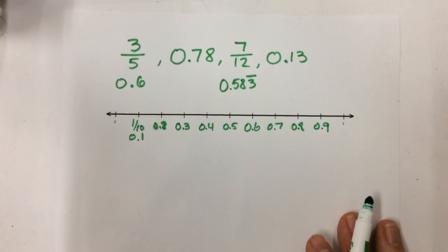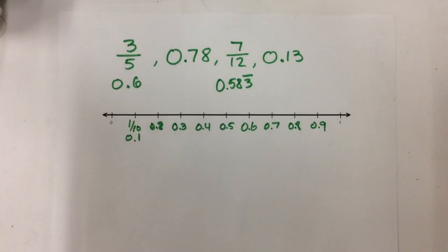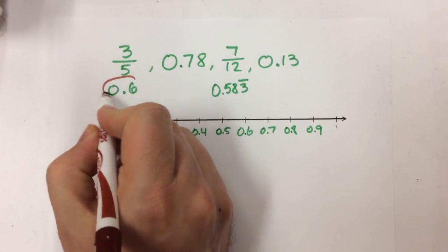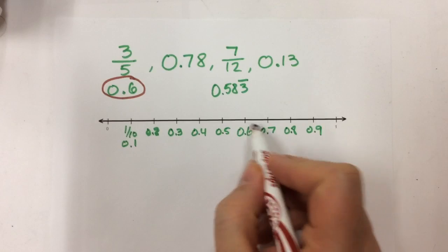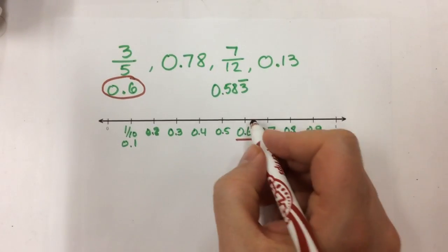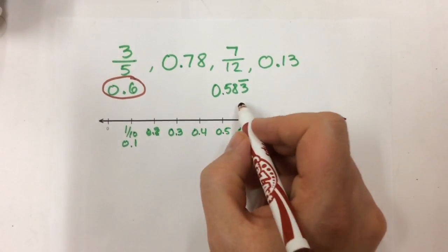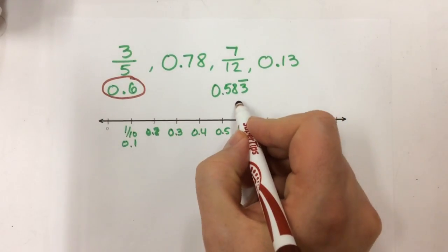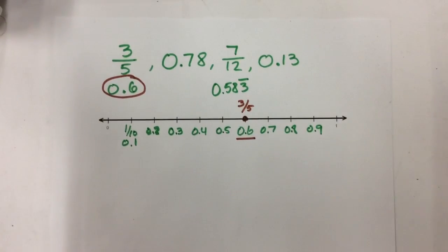Now that I've got my number line labeled, I can look at my fractions and decimals and figure out where they go. This first one is really easy — this is 0.6, or 6 tenths. Well, what do I have right here? 6 tenths. So I'm going to put a dot right here and label it. This is 3 fifths, so this is where 3 fifths goes on my number line.